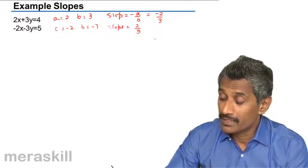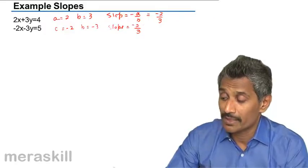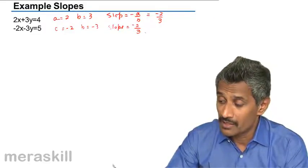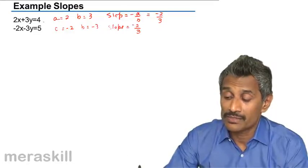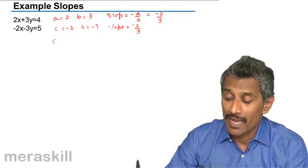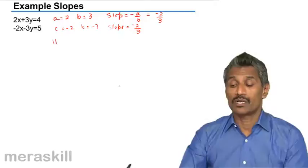So that is also minus 2 by 3. Minus of minus 2 upon minus 3, which is minus 2 by 3. Again, these two lines are parallel lines because the slopes are equal.